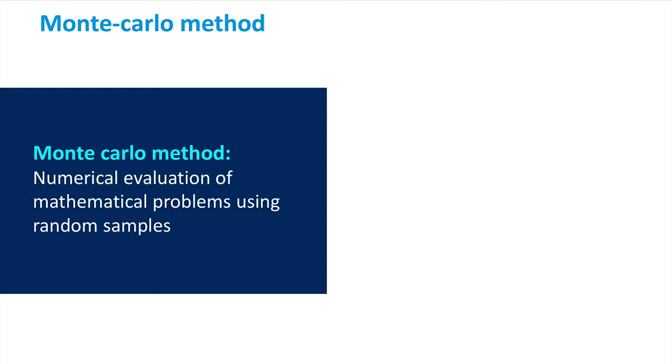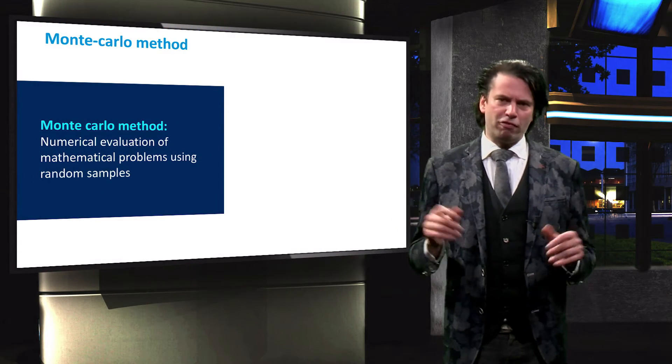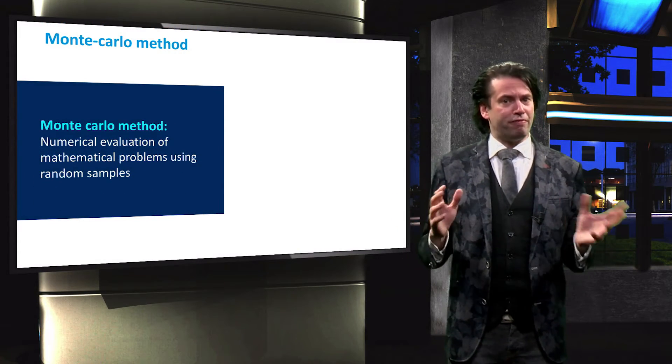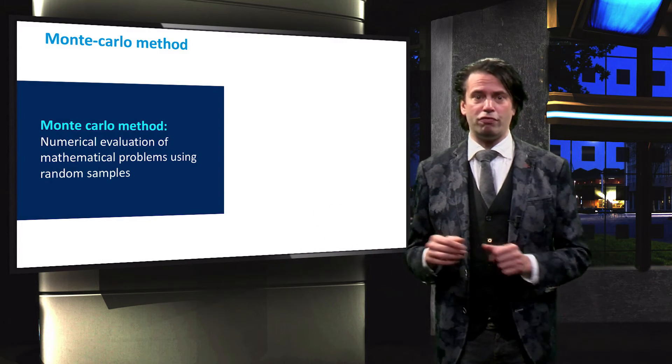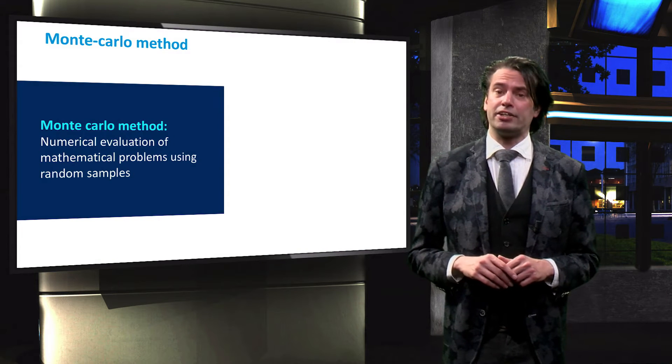The Monte Carlo method is a numerical evaluation using random samples. It is often used in physics for systems with many coupled degrees of freedom. For a Monte Carlo simulation, a domain of possible inputs has to be defined, such as the inclination and direction of arrays. A finite number of random rays is then generated.